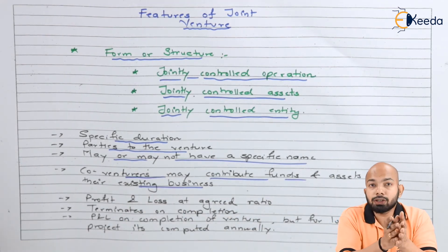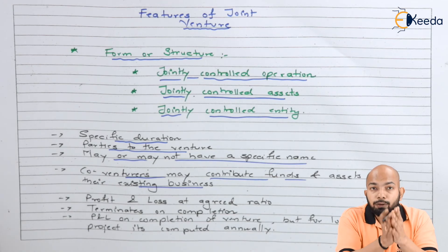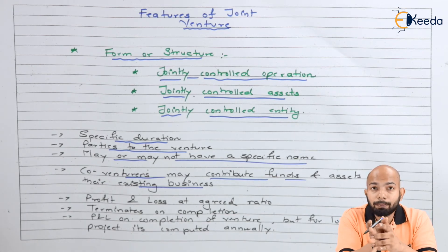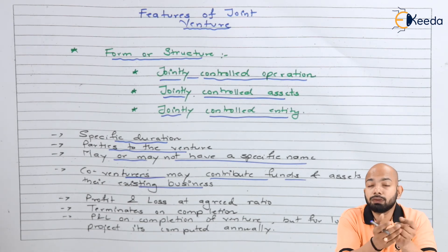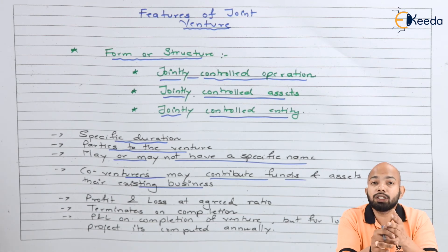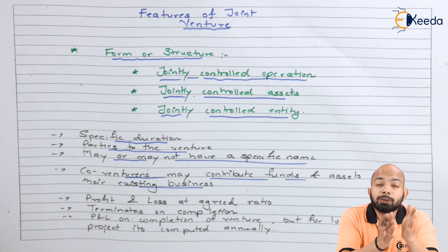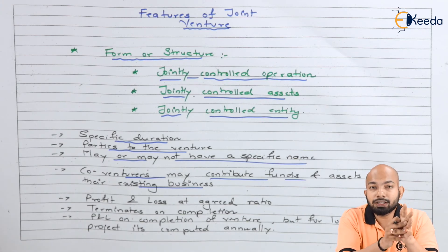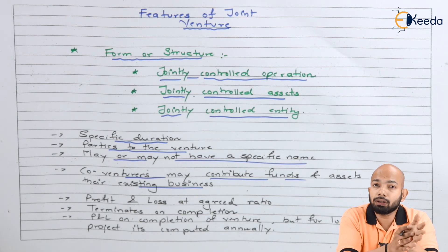Co-venturers can either opt for adding funds or using assets from their own existing business for this specific joint venture. It may or may not happen — it depends on the description of the co-venture itself. Assets and funds from their own existing business can be taken into consideration, provided that is the necessity of the joint venture or if it suffices the cost of their specific production.